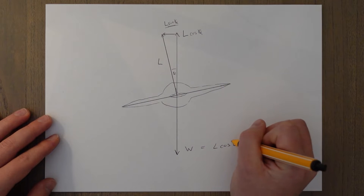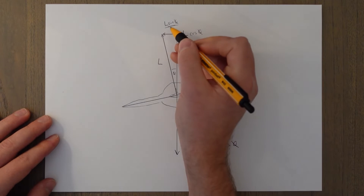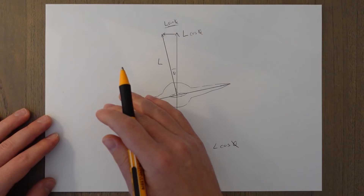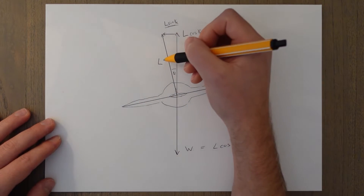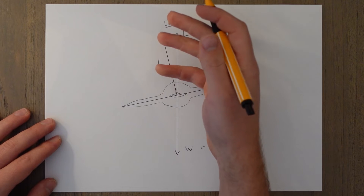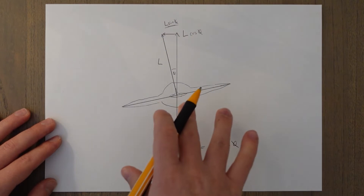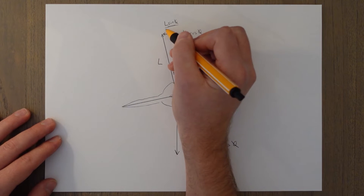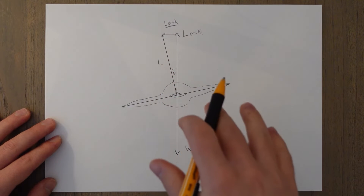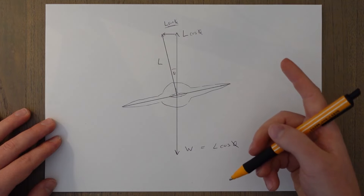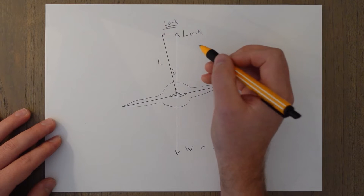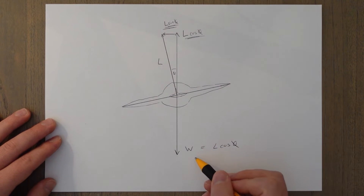We see that weight and lift times cosine of the angle of bank balance out — so weight equals lift cosine theta. The horizontal component, L sine theta, isn't balanced by anything, as that's the force we're using to turn. Because some of this lift is being used to turn us, we're taking away L sine theta from the total amount of lift. If we had the same amount of lift before the turn as during the turn, we'd suddenly lose L sine theta's worth of lift, and the aircraft would be unable to maintain steady level flight.